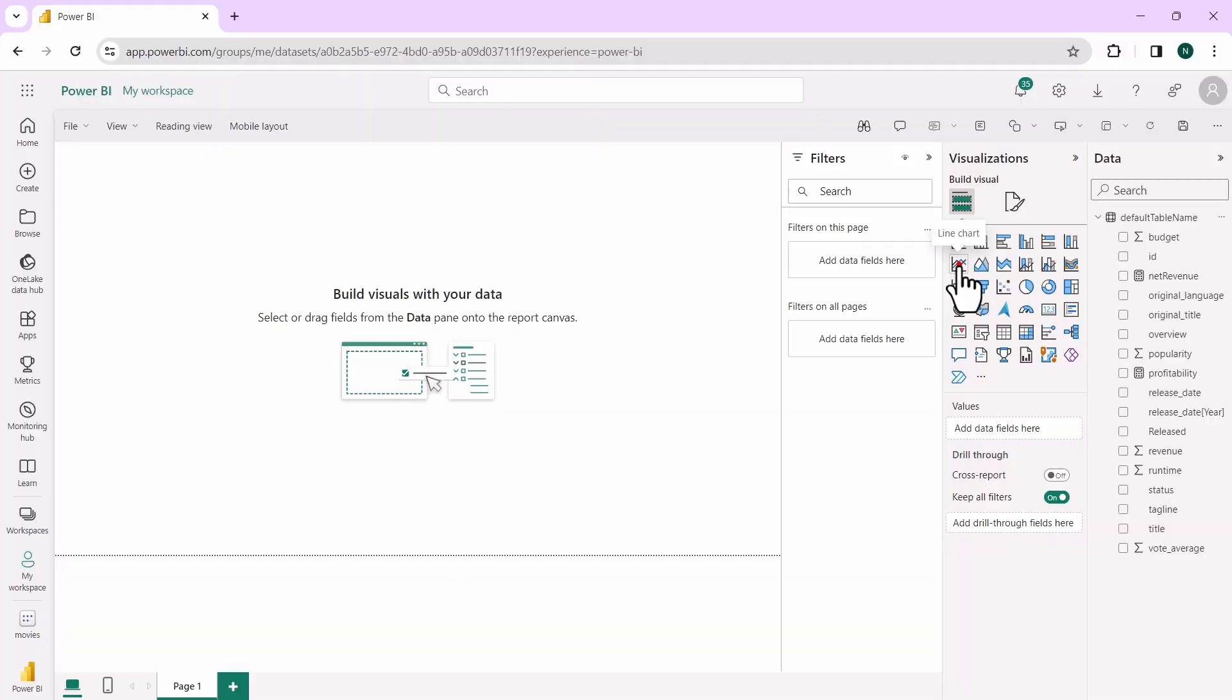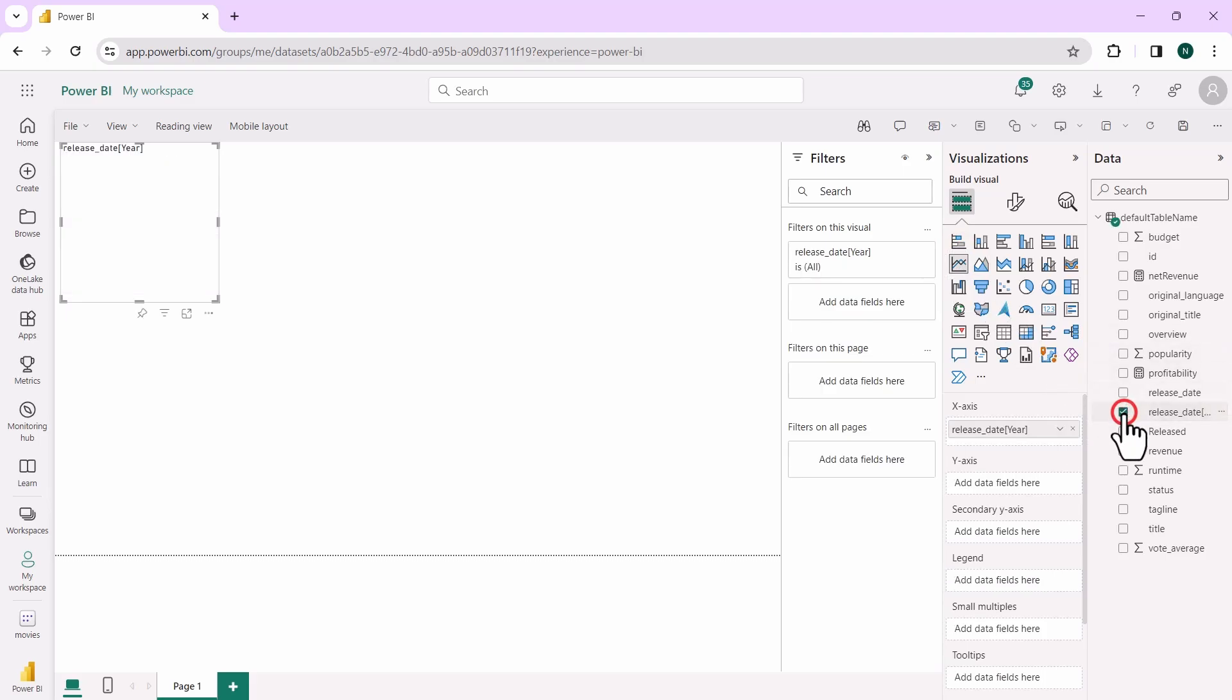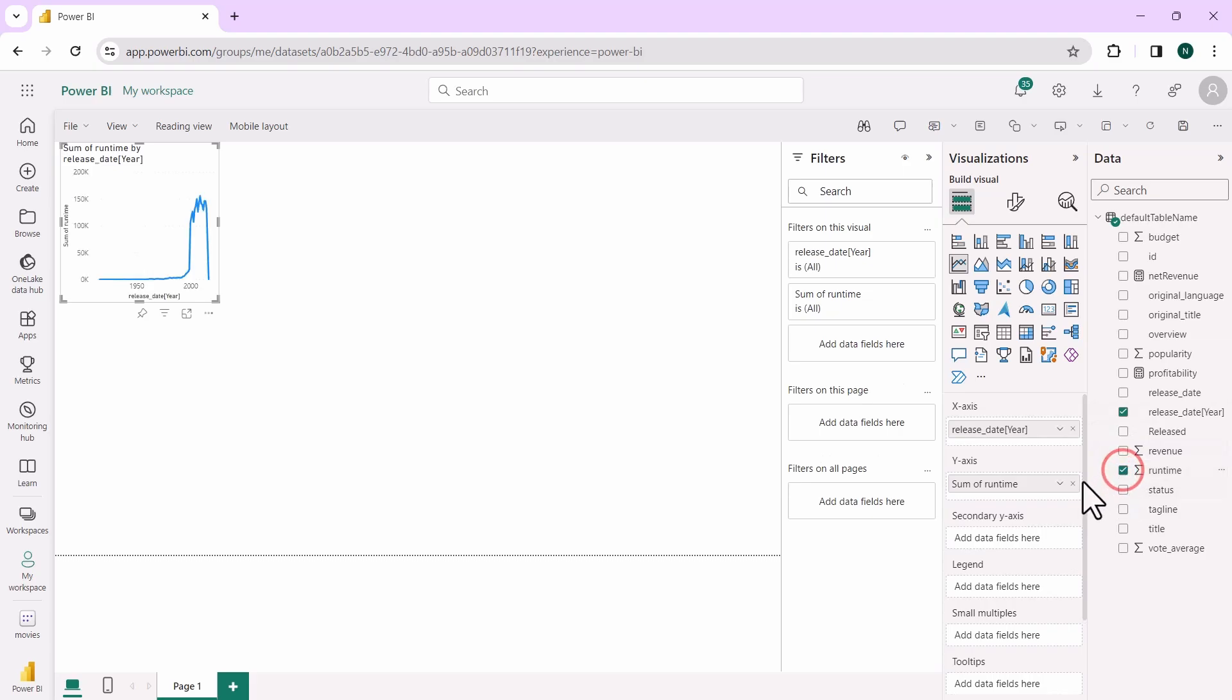For the first visualization, select line chart. Click on release date year for the x-axis and runtime for the y-axis. Change the calculation to median. Enlarge the chart and deselect it.